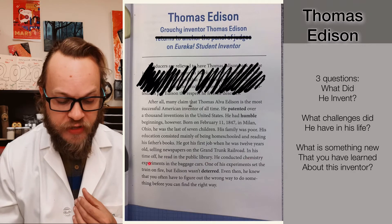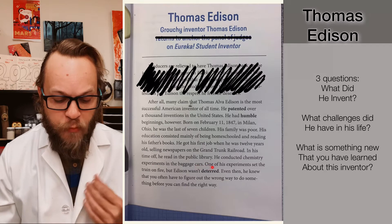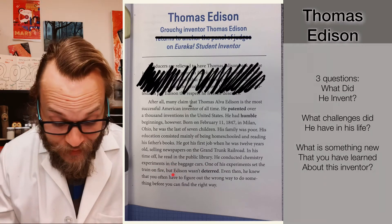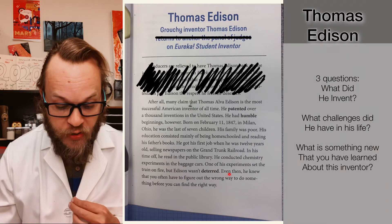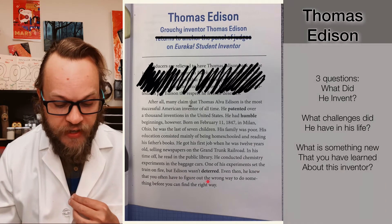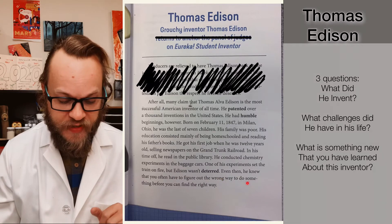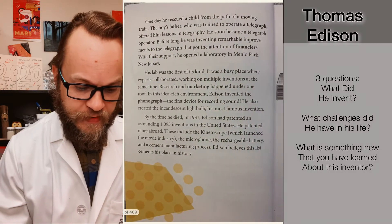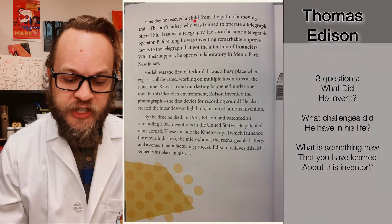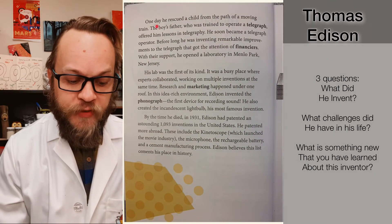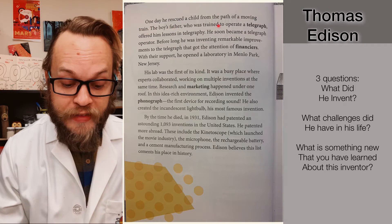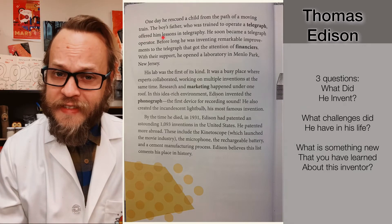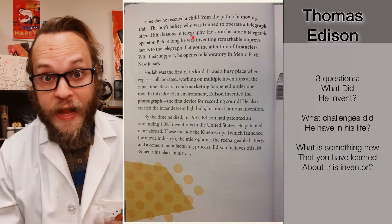He conducted chemistry experiments in the baggage cars, and one of his experiments set the train on fire. But Edison wasn't deterred. Even then, he knew that you often have to figure out the wrong way to do something before you can find the right way of doing something. One day, he rescued a child from the path of a moving train. The boy's father, who was trained to operate a telegraph, offered him lessons in telegraphy.